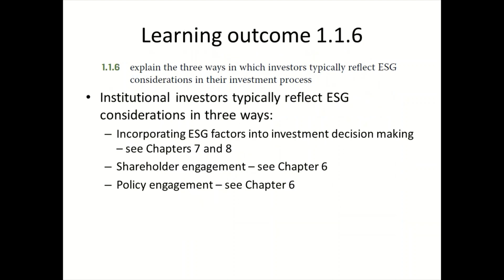The sixth learning outcome explains the three ways in which investors typically incorporate ESG in the investment process: incorporating ESG factors into investment decision-making, shareholder engagement, and proxy engagement. These will be elaborated in later chapters, so you probably don't need to worry too much about these now.